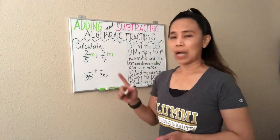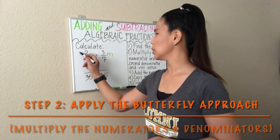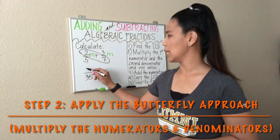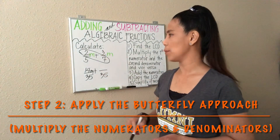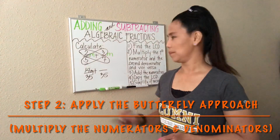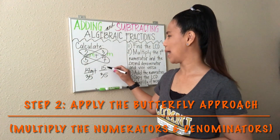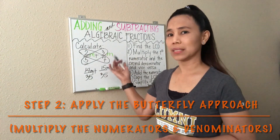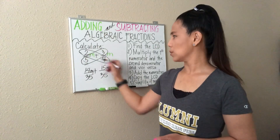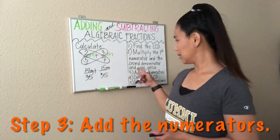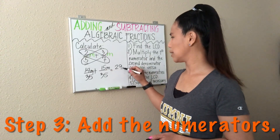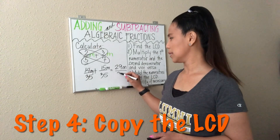A quick way to get the new numerator is to multiply the first numerator by the second denominator. So 2 times 7 is 14, or 14M because there's an M with the 2. And then we multiply the second numerator by the first denominator. So 5 times 3 is 15, or 15M. The variable usually goes with the numerator. You can see this is like a butterfly approach — 2 times 7 is 14, 5 times 3 is 15. Now you can add the numerators: 14M plus 15M is 29M, and we just copy the common denominator, which is 35.